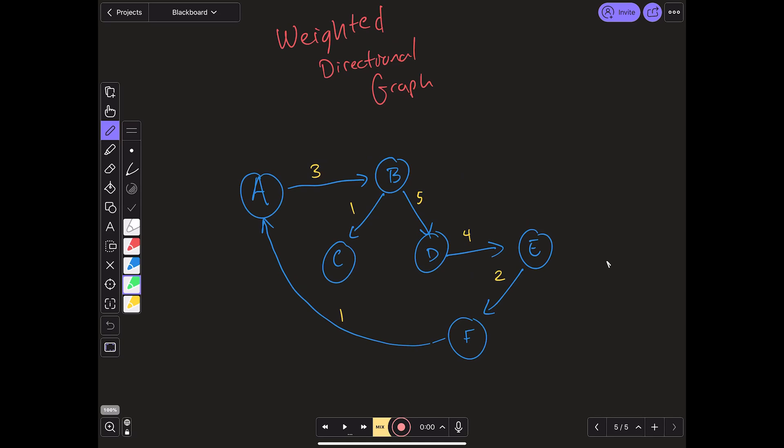And finally, here's an example of a weighted directional graph. Now as we can see here, every single edge has not only a direction, but also a weight above it. And this is what a graph looks like when you combine the two. Another interesting thing you can note here is if you were to start at A, you could go to B, then D, then E, then F, and then all the way back to A.